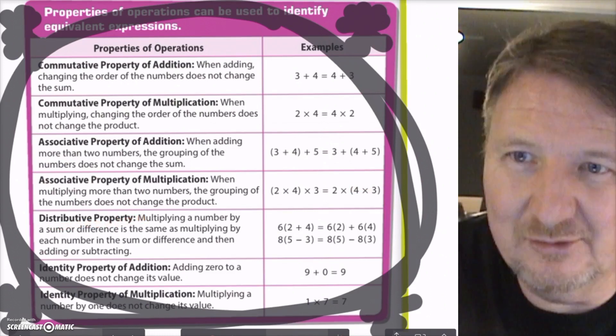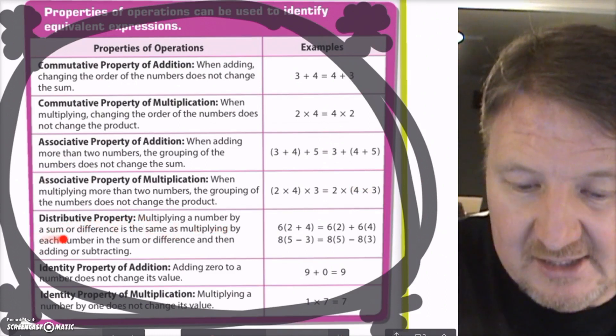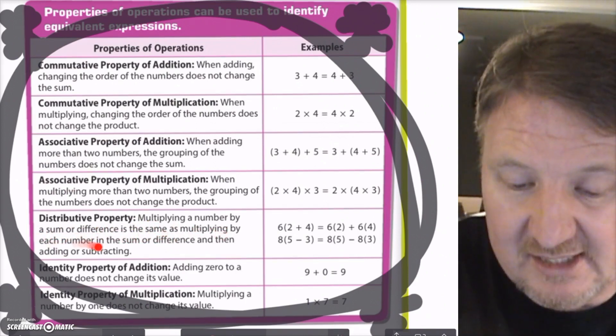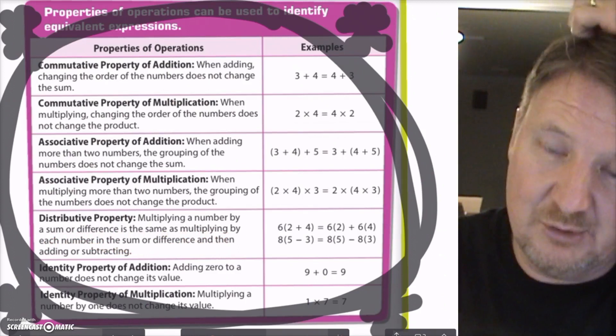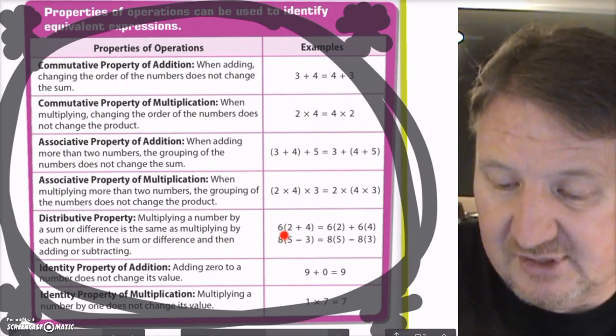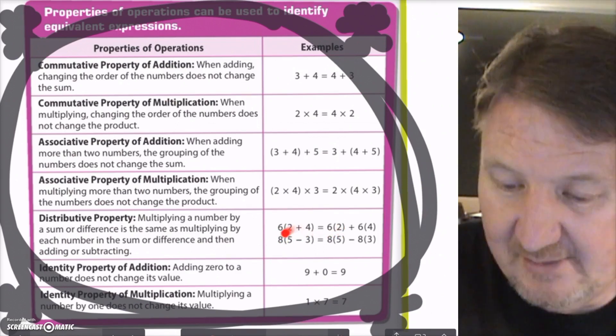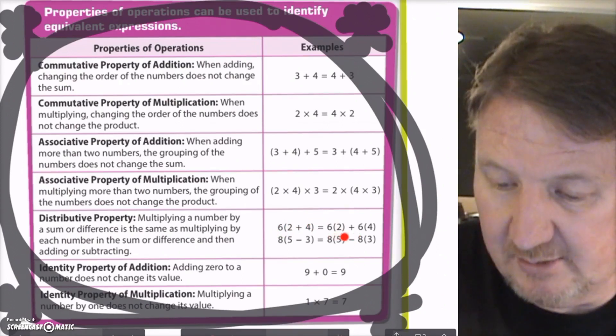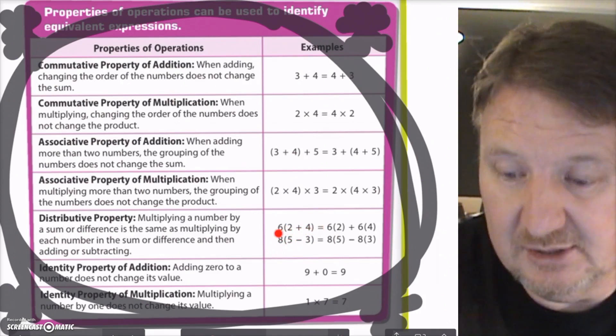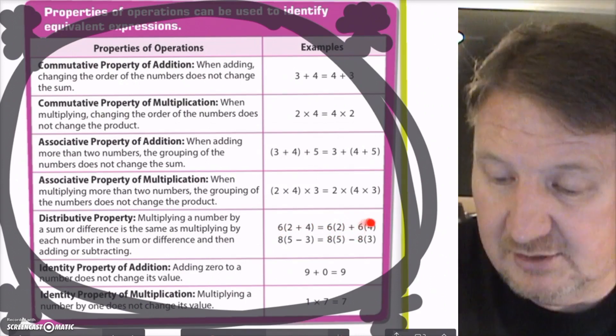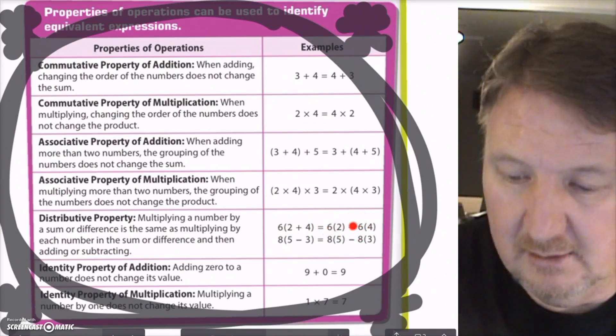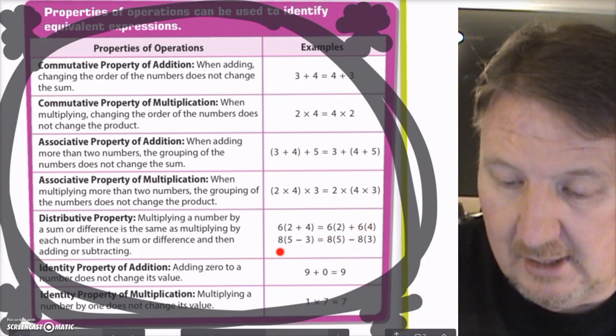Then you have the distributive property. Now, this is a little tricky, but it says multiplying a number by a sum or difference is the same as multiplying each number in the sum or difference, and then doing your adding and subtracting. So this is your example. I have 6 times 2 plus 4, and that's the same thing as taking the 6, multiplying it times 2, and then adding it to 6 times 4. 6 times 2 plus 6 times 4. Or I can do, now this one I can do with subtraction. I can say, 2 plus 4 is 8, times 6 is 48, or I can say, 6 times 2 is 12, 6 times 4 is 24, 24 plus 12 is 48. So that works.